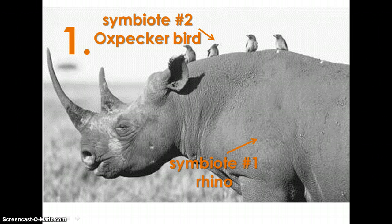In example number one, symbiote number one is the rhinoceros and symbiote number two is the oxpecker bird. The oxpecker bird sits on the back of the rhinoceros. The rhinoceros provides the oxpecker bird protection, and the oxpecker bird removes parasites from the rhino's back. When the oxpecker takes off to fly away, that also alerts the rhino of possible danger.